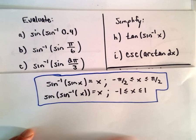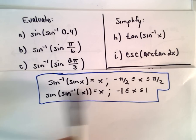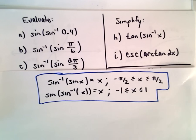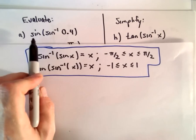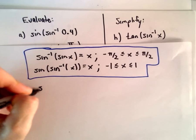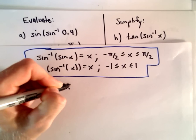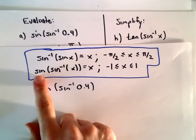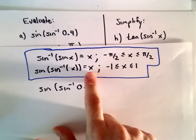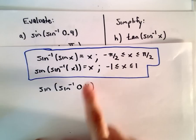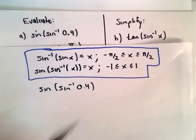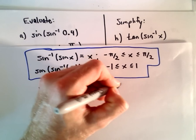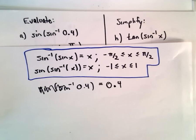The first two are easy, using our cancellation laws here, making a note of the restriction on the domains. For part A, we have sine of inverse sine of 0.4. If you take sine of inverse sine of some number, you get exactly that number back as long as that number is between negative 1 and 1. So in this case, these just cancel out and you get 0.4.